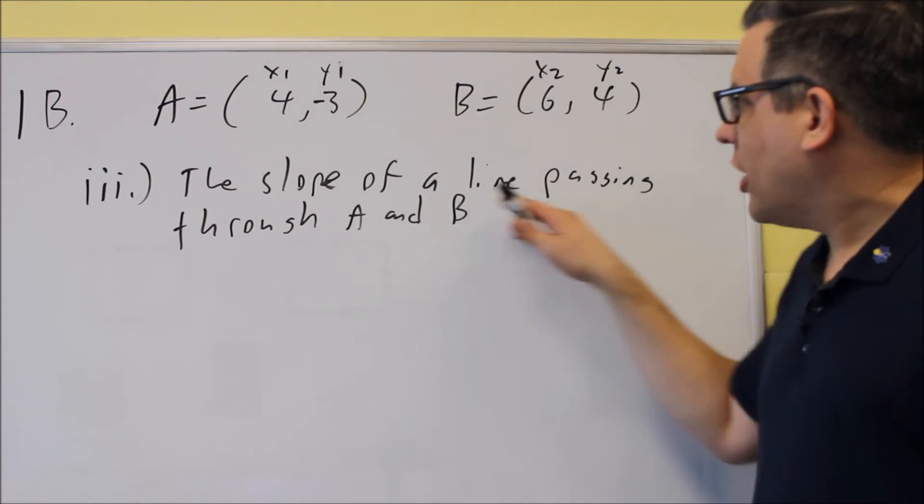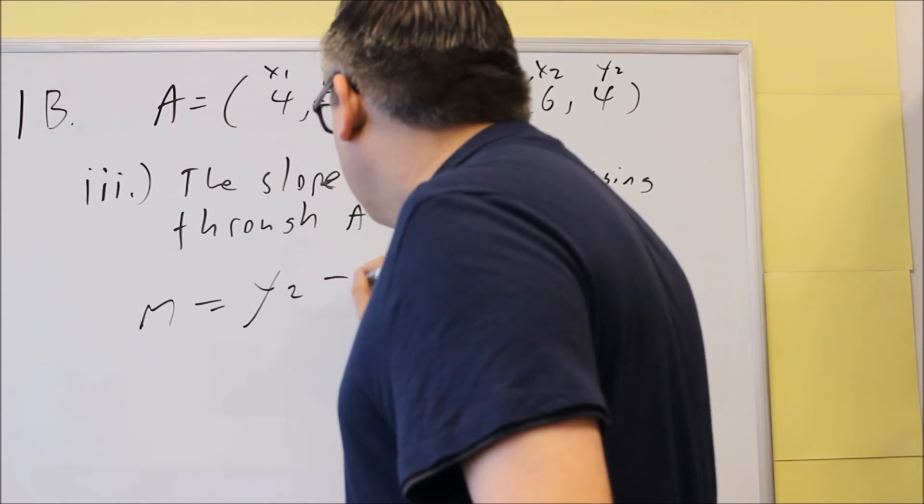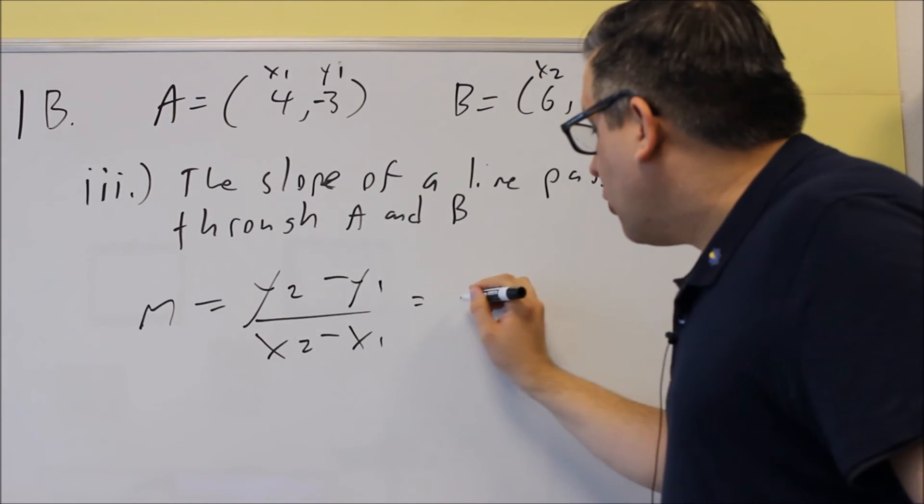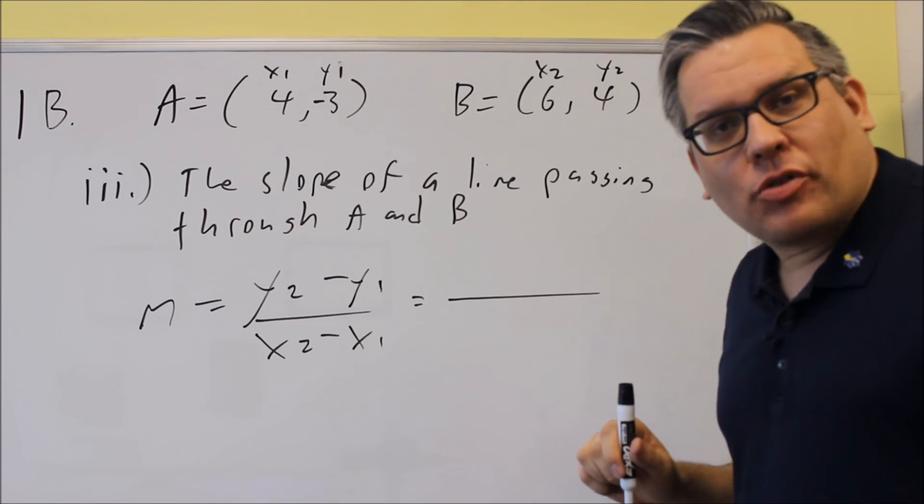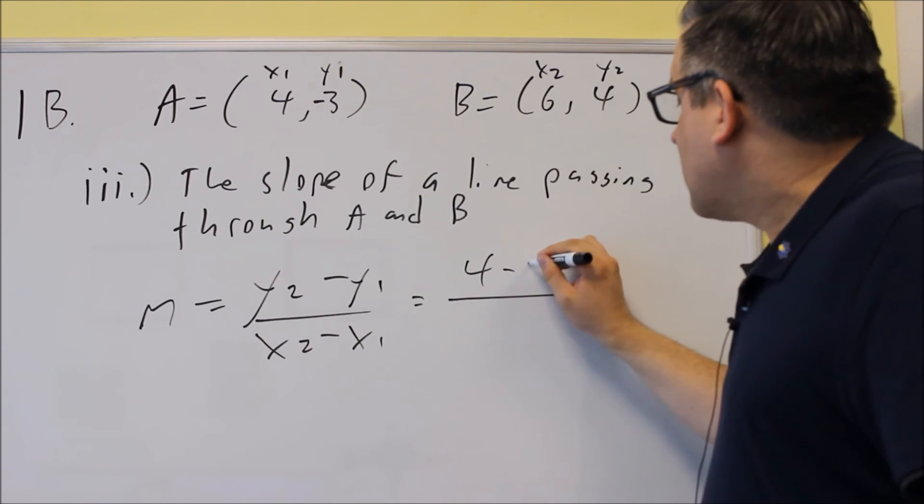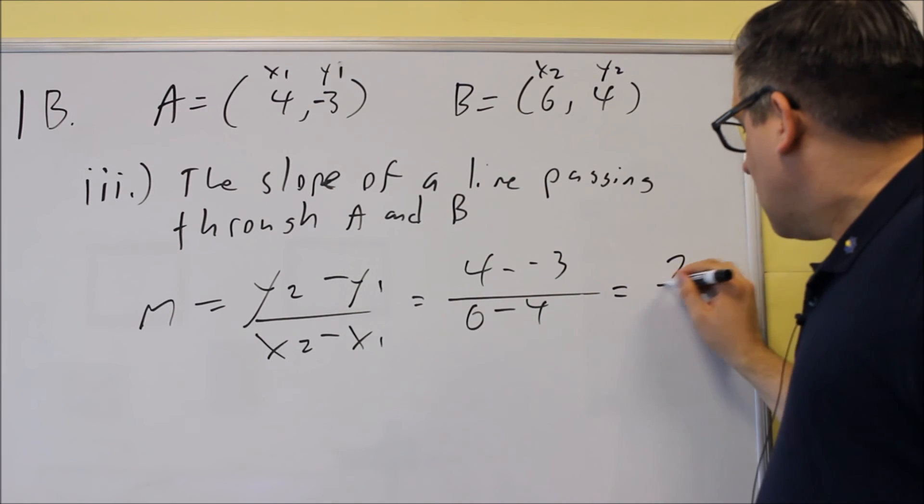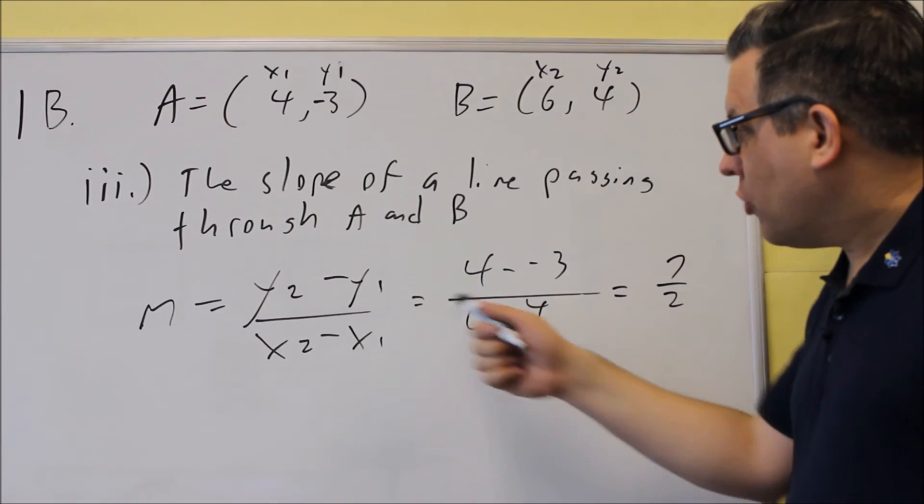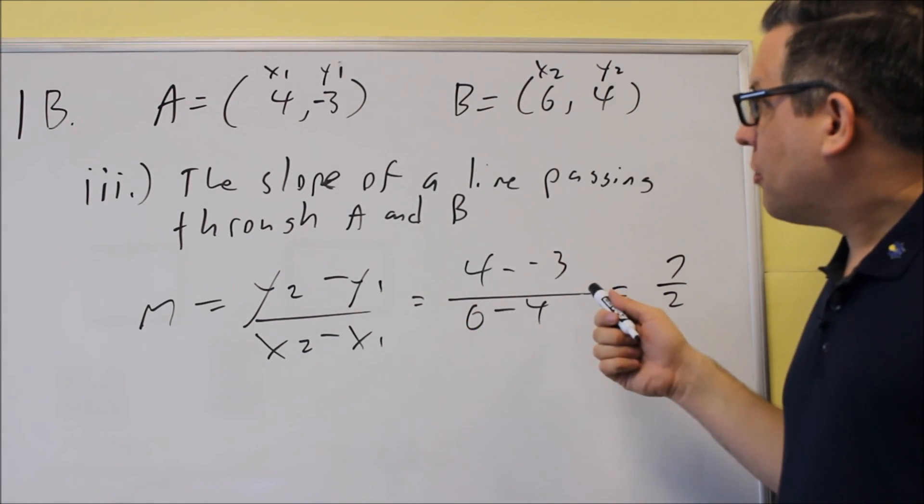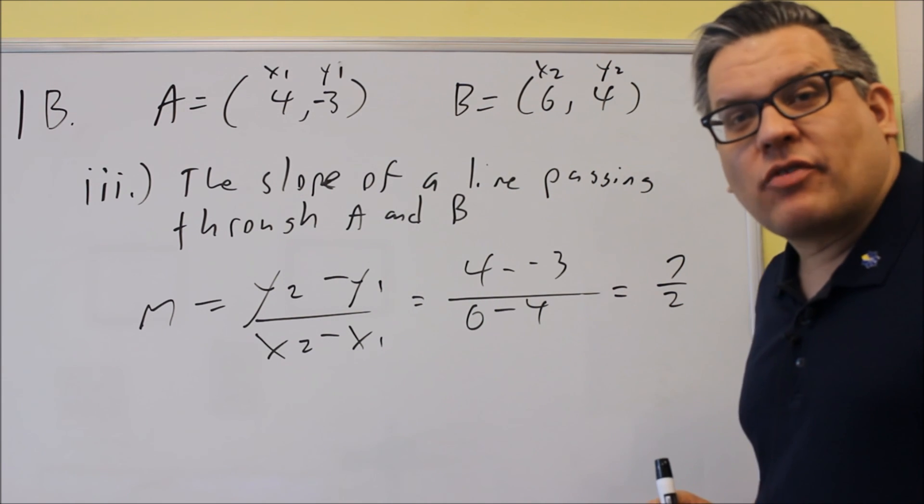Next, we want the slope of a line passing through A and B. So we're going to use the slope formula, y2 minus y1 over x2 minus x1. We're going to put in the points as labeled there. So we're going to do the difference of y's, 4 minus negative 3 over 6 minus 4. That's going to give us positive 7 halves when we work this out. So again, we've got the formula as one you want to make sure you know. Plug in our points again from the same way we have it labeled. And then that's our final answer, 7 halves.